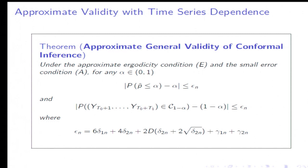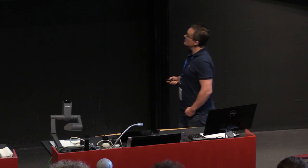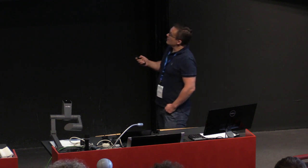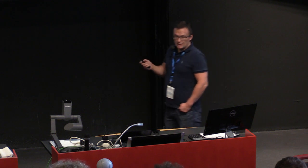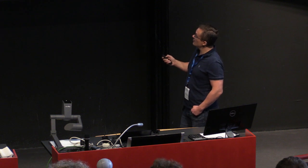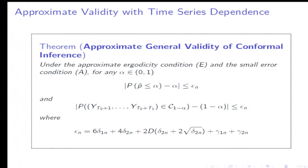Once we have this, we have this general result that says that under the approximate ergodicity condition and the small error condition, the p-value is approximately distributed as uniform with the margin of error epsilon. And our confidence set covers the future trajectory with probability 1 minus alpha and the margin of error epsilon where epsilon is calculated exactly.